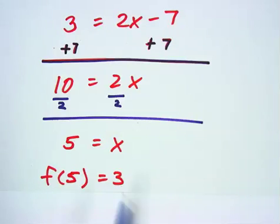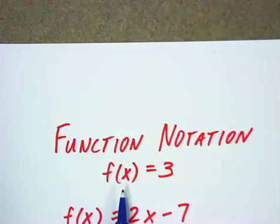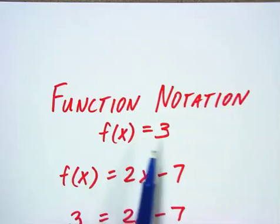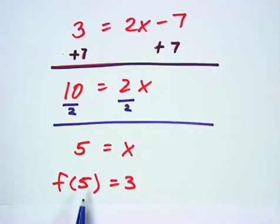The original question that we were working on was back up here, which looked like this. When is the function equal to 3? So you take that whole equation or function, set it equal to 3, solve, and you're saying that the input of 5 gives us an output of 3.